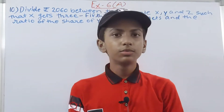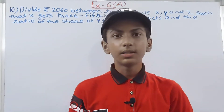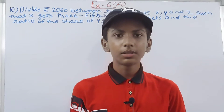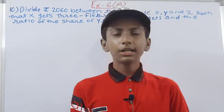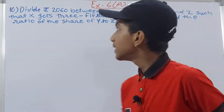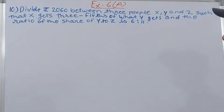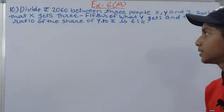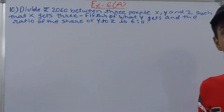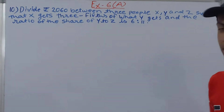Hello friends, welcome back to my YouTube channel. In this video we are going to solve ICSE Mathematics Class 7, Chapter 6, Ratio and Proportion, Exercise 6A, Question 10. This question says: divide rupees 2060 between three people X, Y, and Z such that X gets three-fifths of what Y gets, and the ratio of the share of Y to Z is 6 is to 11.